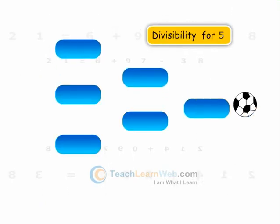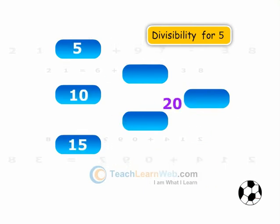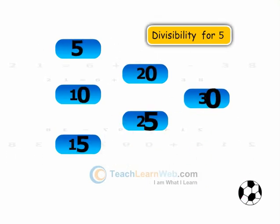Now let us check divisibility for 5. All the above numbers have 5 or 0 in its units place and hence are divisible by 5. A number which has either 0 or 5 in its ones place is divisible by 5. Other numbers leave a remainder.